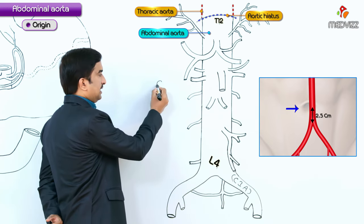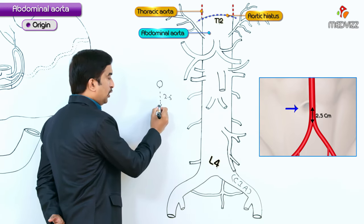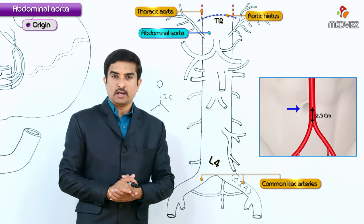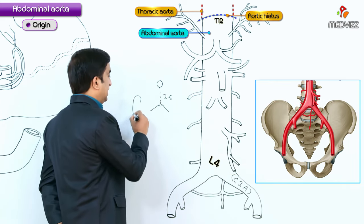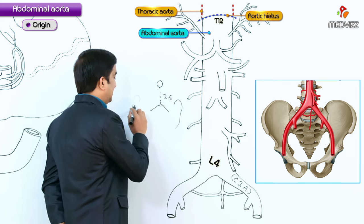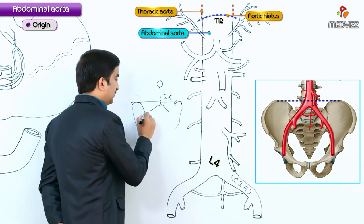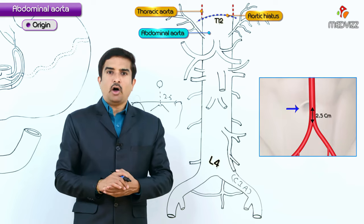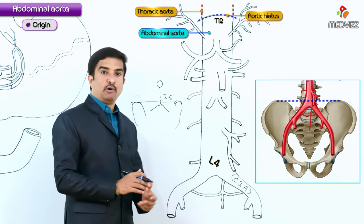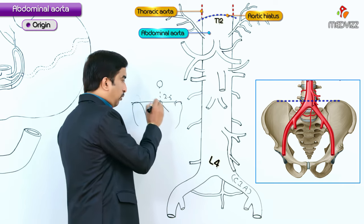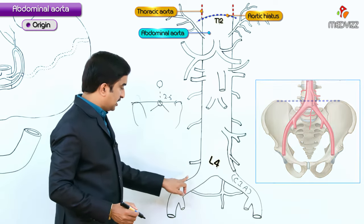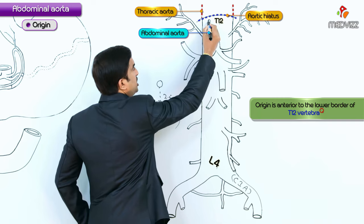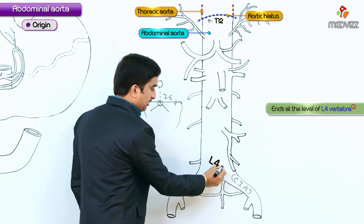This bifurcation can be visualized on the anterior abdominal wall as a point approximately 2.5 centimeters below the umbilicus. Alternatively, a line extending between the highest points of the iliac crests also marks the level of bifurcation. Two important MCQ points: the origin is T12 and the termination is at the level of L4.